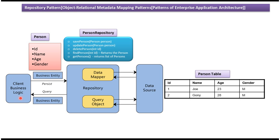Suppose this Client Business Logic wants some Person information from the Person Table — like it wants the Joe Person information. Then what the Client Business Logic will do is call the FindPerson method by passing the ID, which is 1. The FindPerson method in the Person Repository will get the Person information for Joe from the Person Table using Hibernate or JDBC, get the ID, Name, Age, and Gender, formulate the Person Object, and send it to the Client Business Logic.